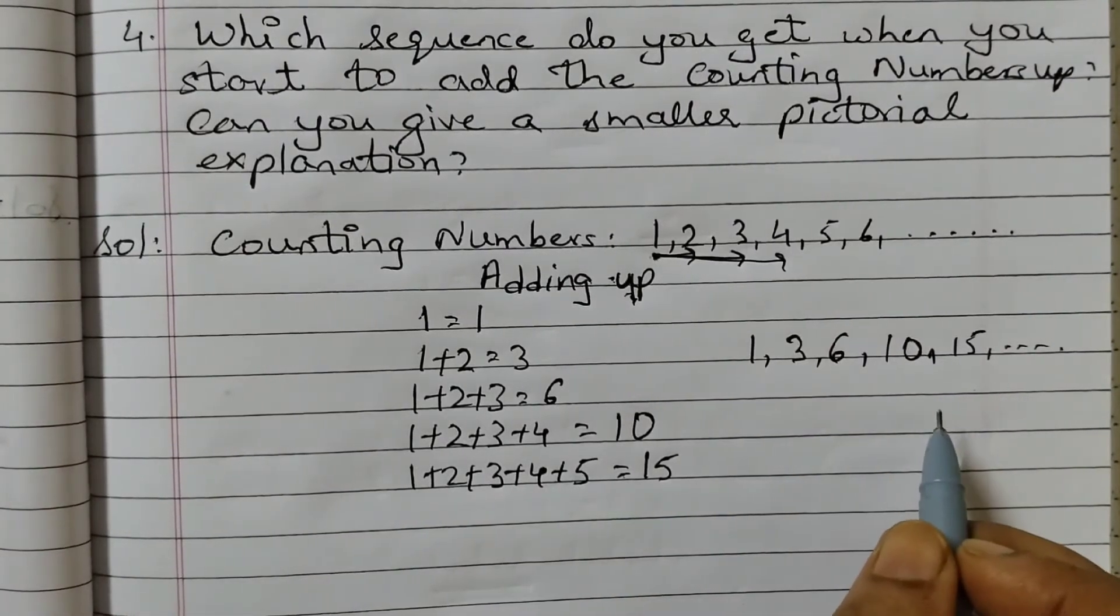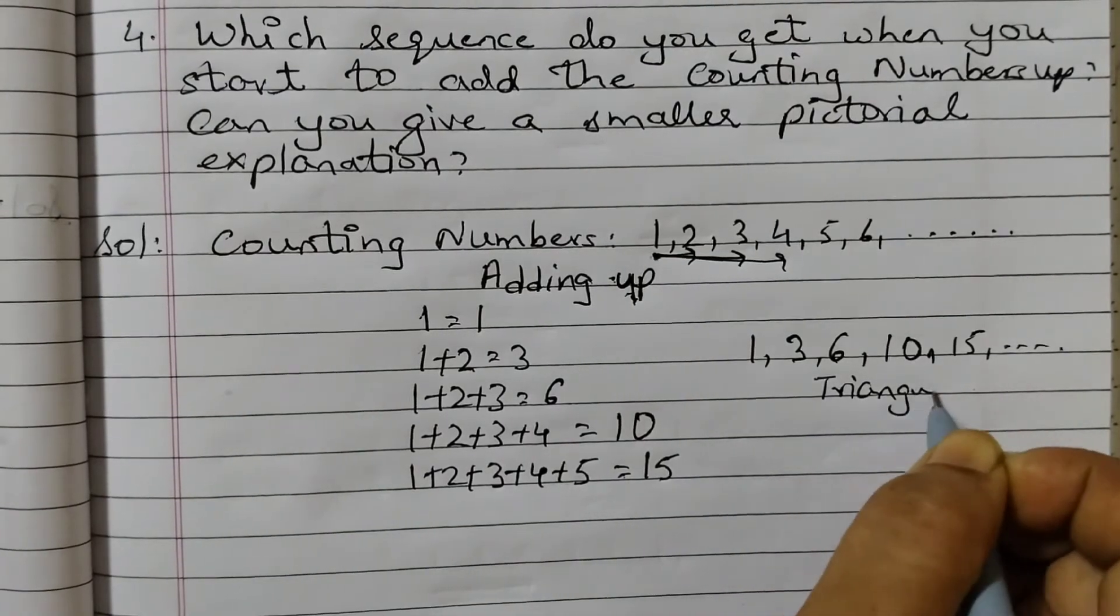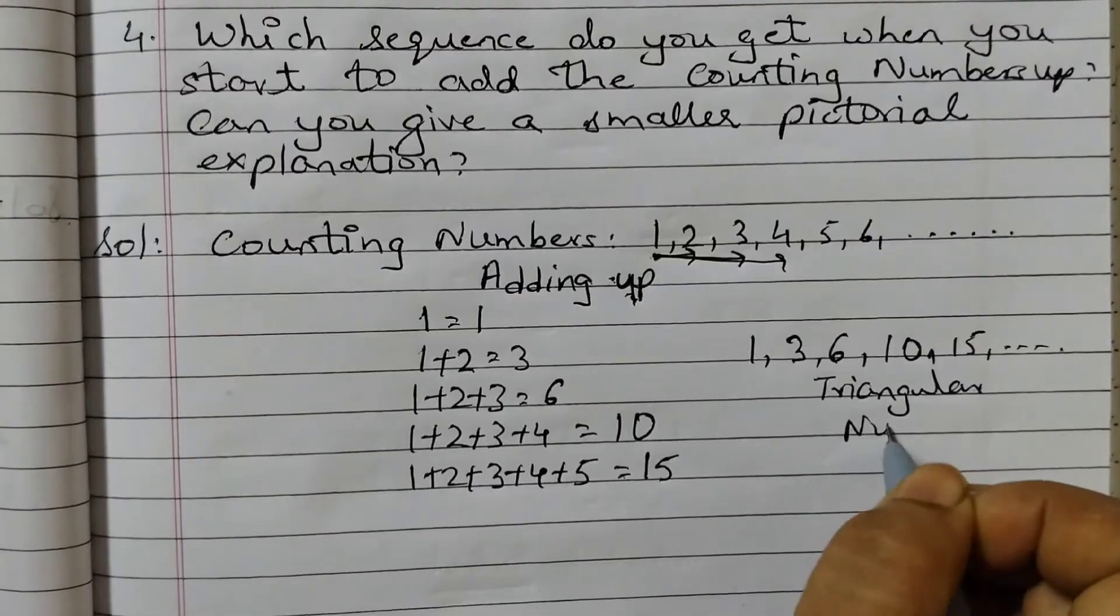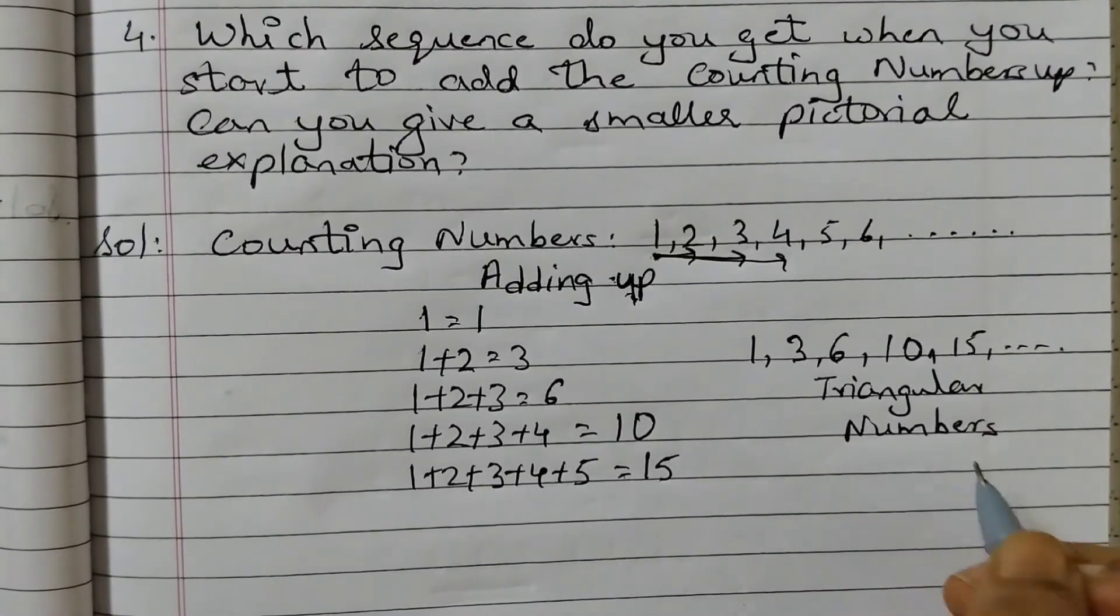So what are these numbers? These are called triangular numbers. And I will show you now why these numbers are called triangular numbers.